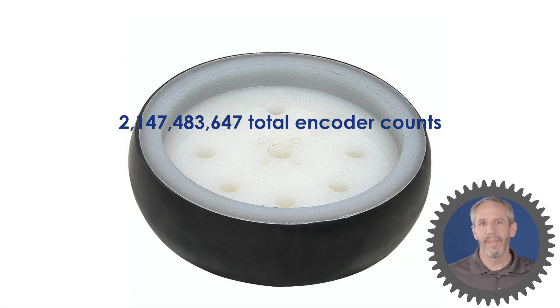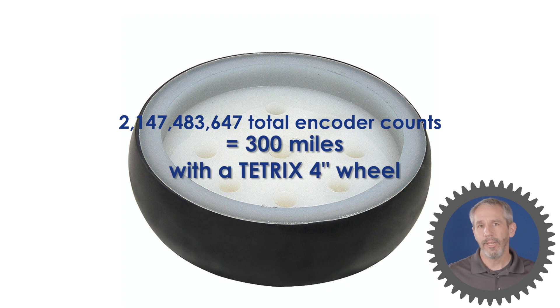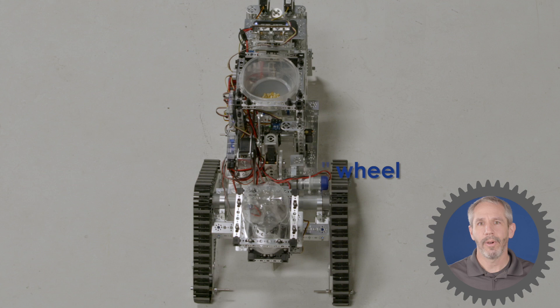Now that's a big number, but if I'm using a standard four inch Tetrix wheel, then that's about 300 miles worth of encoder counts.